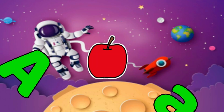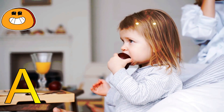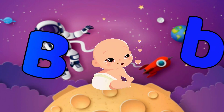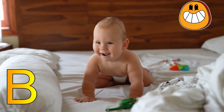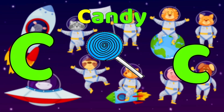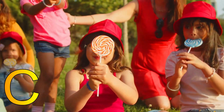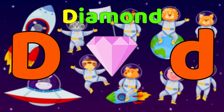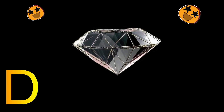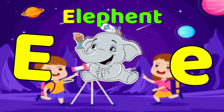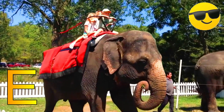A is for Apple. A, Apple, A. B is for Baby. B, Baby, B. C is for Candy. C, Candy, C. D is for Diamond. D, Diamond, D. E is for Elephant. E, Elephant, E.